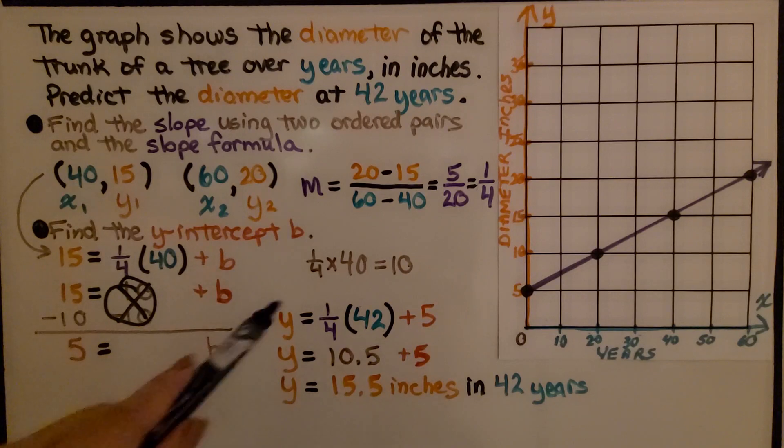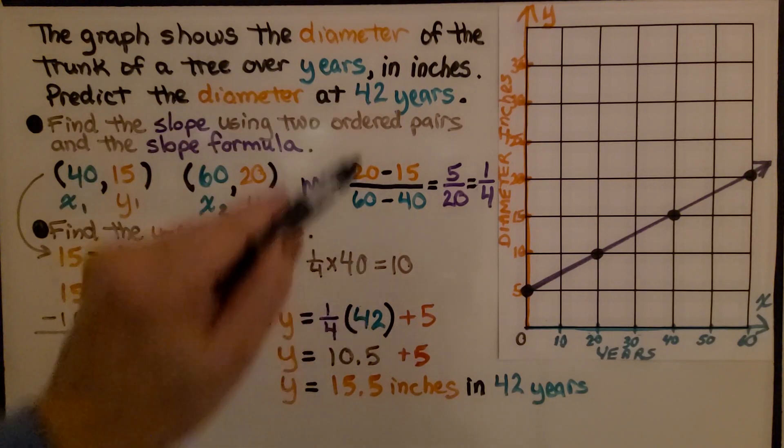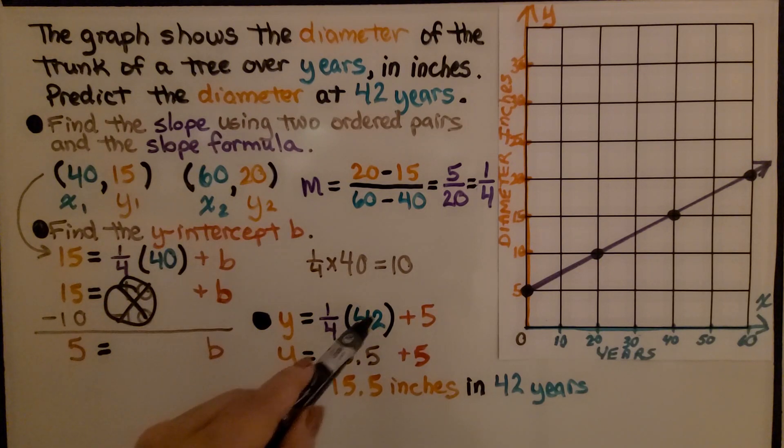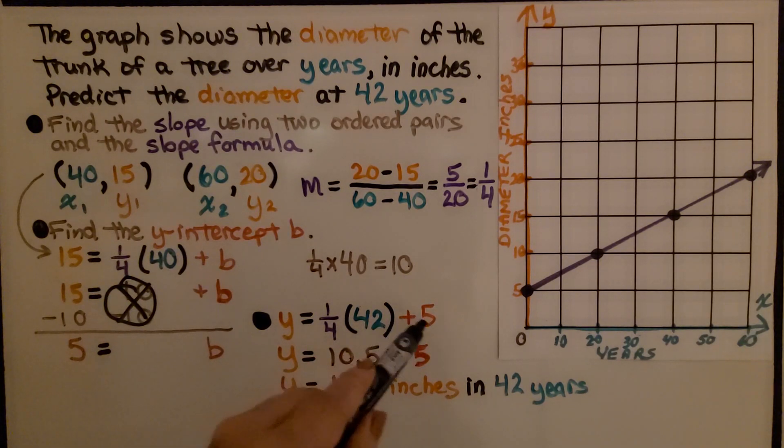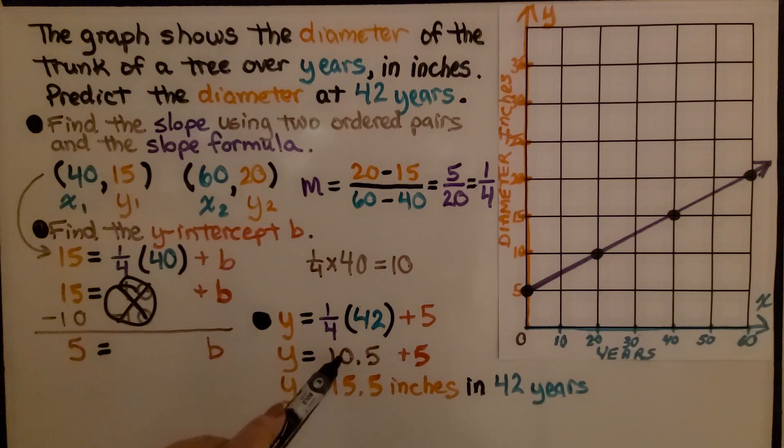Now we use this 5 in our equation. We're going to find 42 years. So we substitute 42 for x and we have our y-intercept b plus 5. We do the equation: 1/4 times 42 is 10.5. We add the 5. We get 15.5 inches. For y, we know the diameter of the trunk will be 15.5 inches in 42 years.